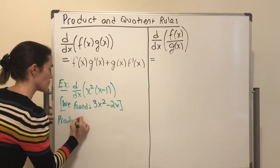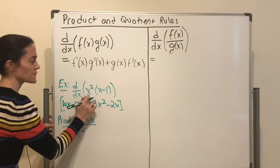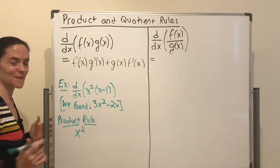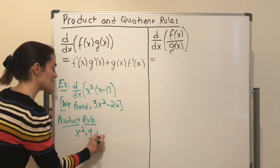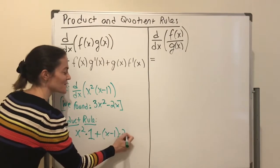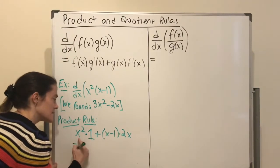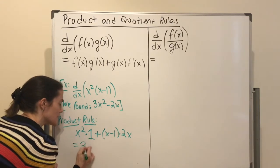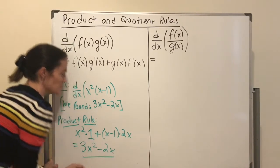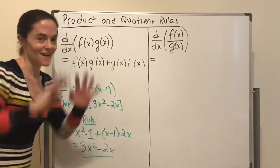Using the product rule: the first is x squared, the second is (x minus 1). First times the derivative of the second — the derivative of (x minus 1) is just 1 — and then plus the second times derivative of the first. The derivative of x squared is 2x. So we get x squared plus 2x squared, which makes 3x squared, and then minus 2x. This matches what we found by distributing.